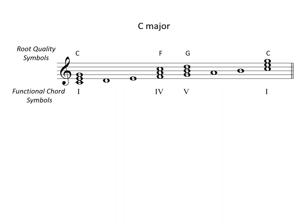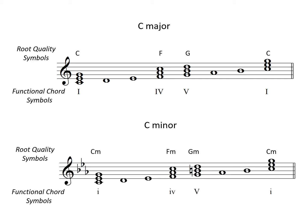These are the functional and root quality chord symbols for the tonic, subdominant, and dominant triads built on the major scale. Here they are for the minor scale.